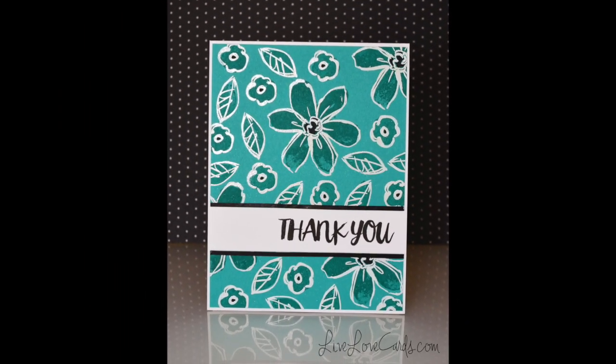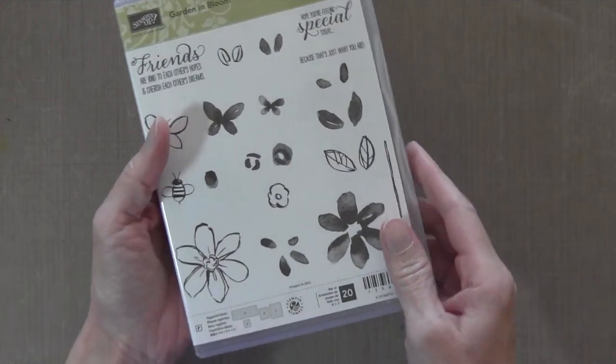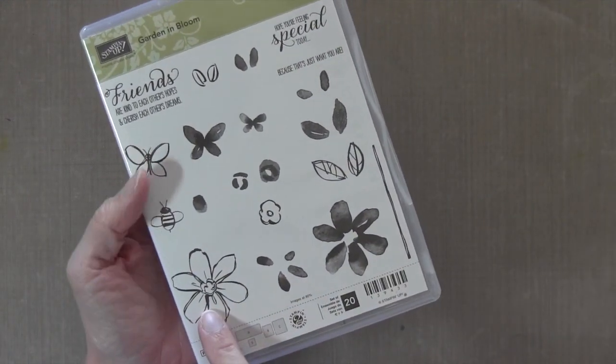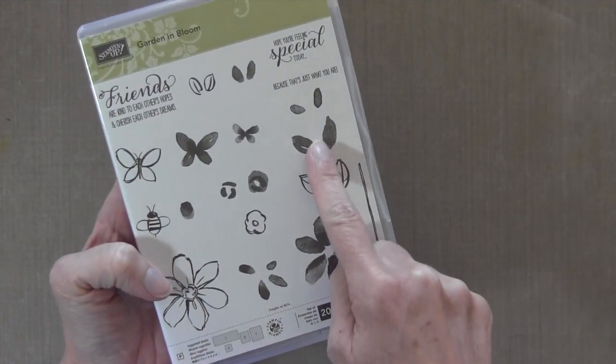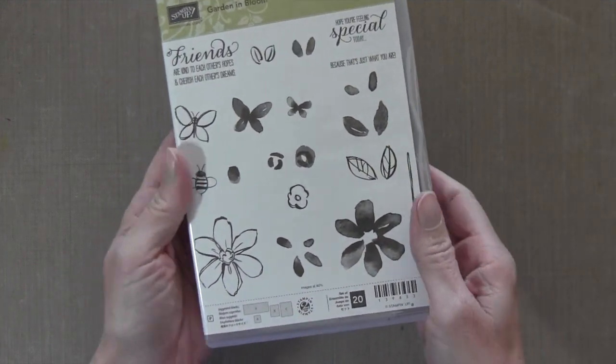I created three different cards, but I'm gonna show you how to do this Bermuda Bay one. This is the Garden and Bloom set by Stampin' Up. I'm using the solid and the outline, not that second step. I'm also using the two steps of the small flower and the leaves.